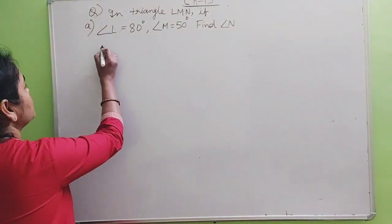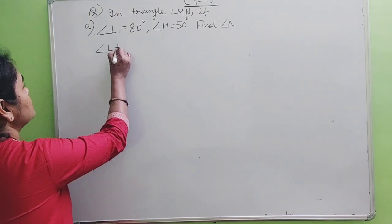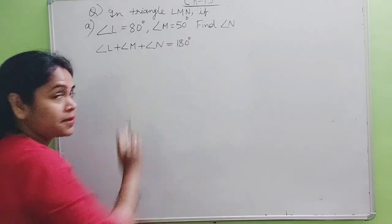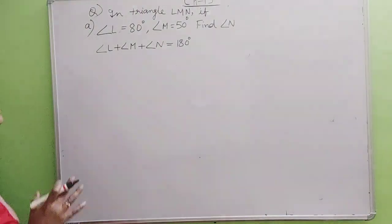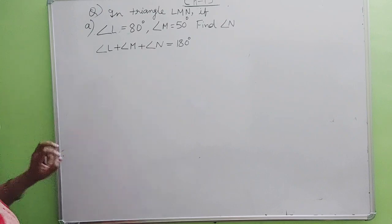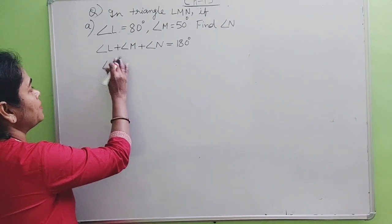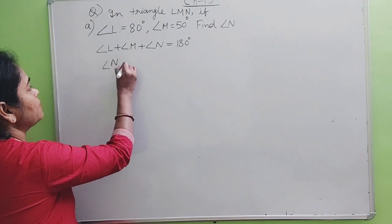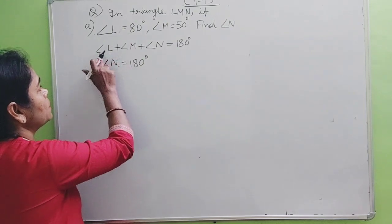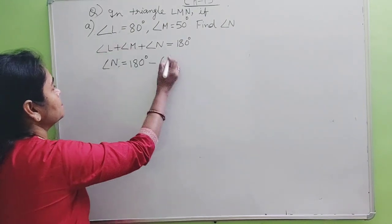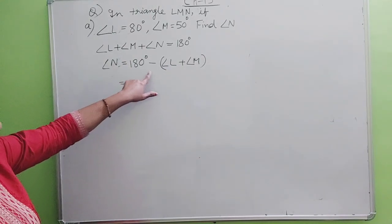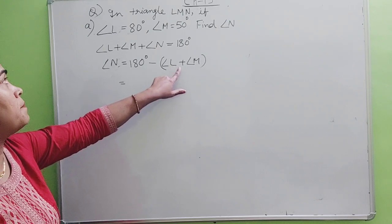So can we say angle L plus angle M plus angle N is equal to 180 degrees? Yes. Now here we have got two angles, angle L and angle M, and angle N we have to find. What we have to find, we will keep on the left side and move the rest to the other side. So angle N is equal to 180 minus the sum of angle L plus angle M.